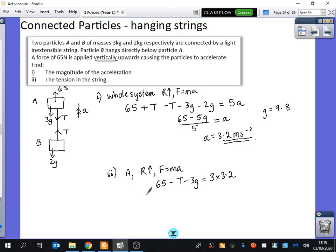So we've now got an equation that's only got one variable in, which is just T. So I'm going to do 65 take away 3G. 65 take away 3 times 9.8. So that's 35.6 minus the tension is equal to 9.6. And when I rearrange this, I get that the tension is equal to 26 Newtons.